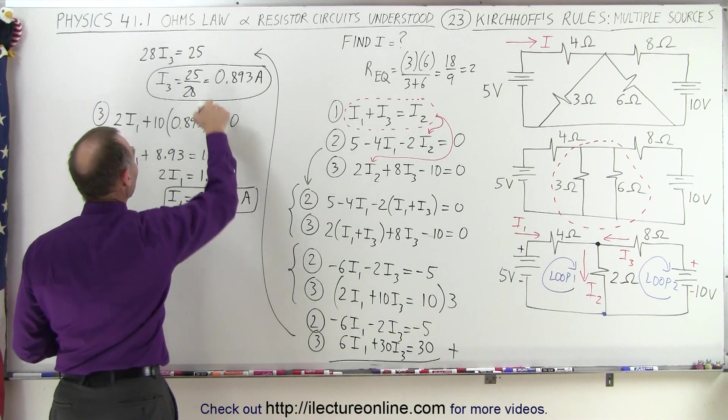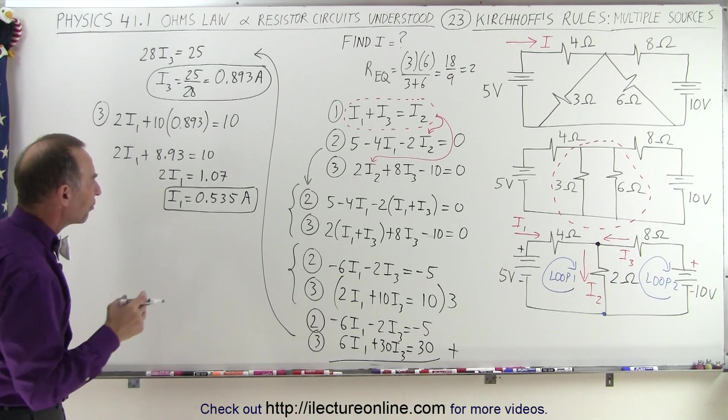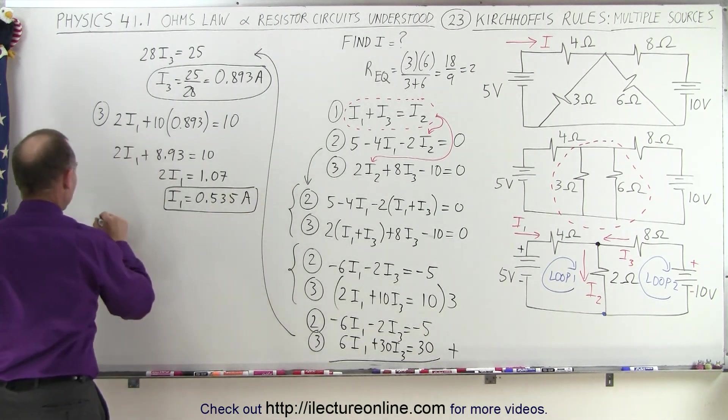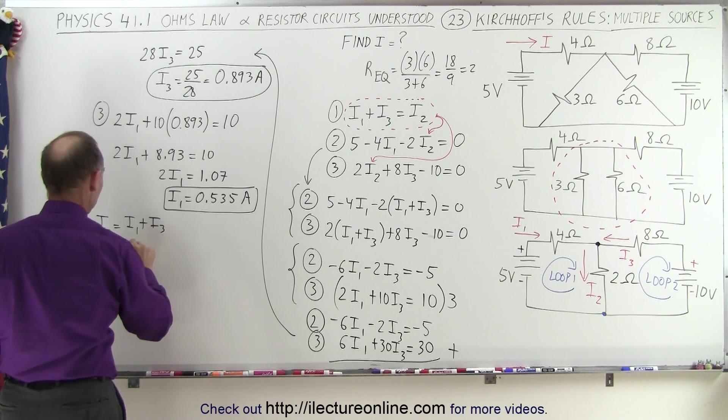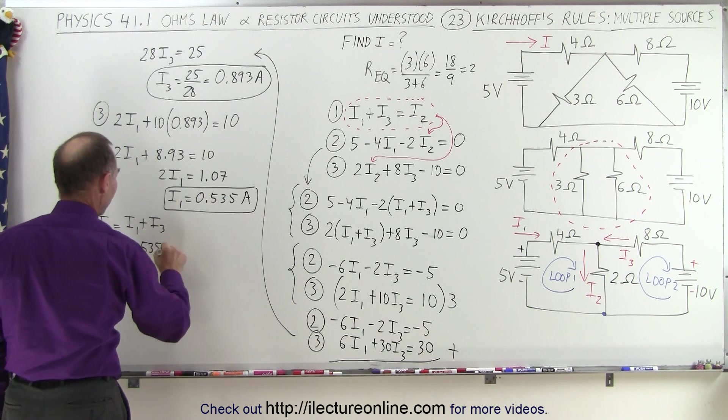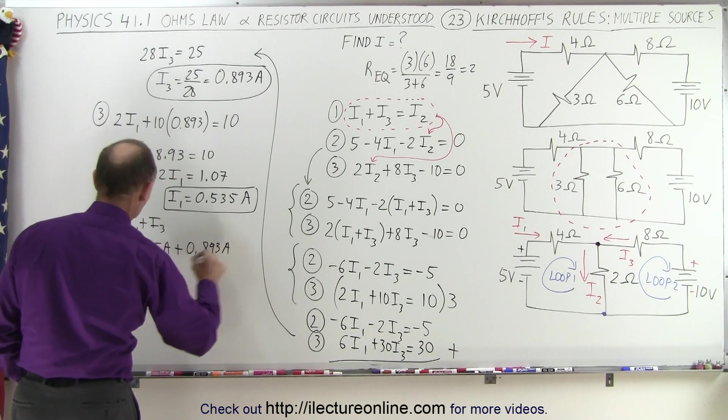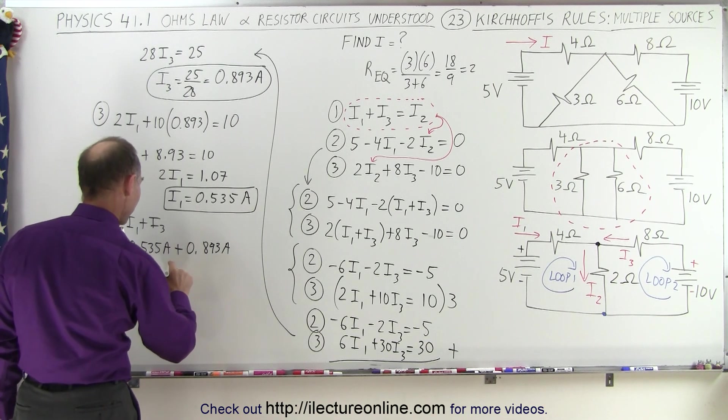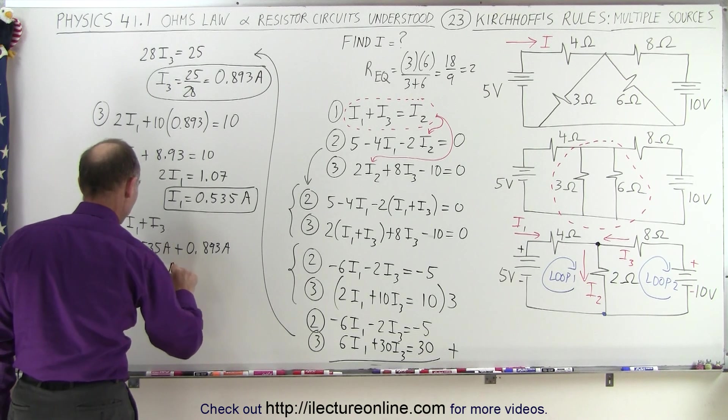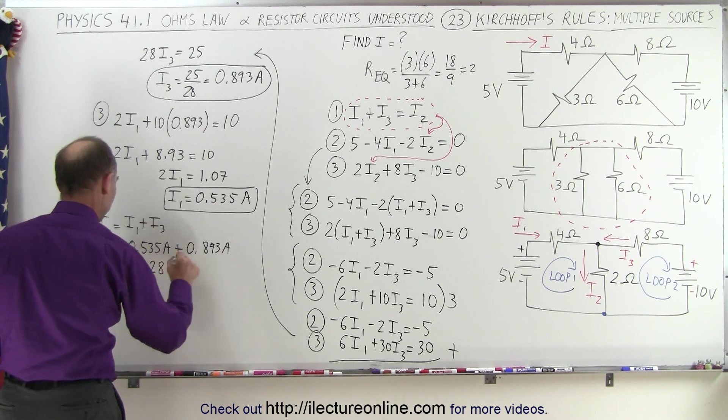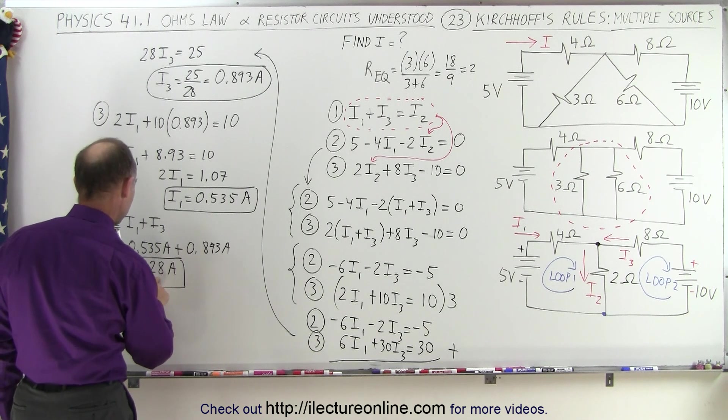So now we have I1, we have I3, but how do we know we are correct? How do we know we did not make a mistake somewhere? Well, let's find I2. We can do that by saying I2 is equal to I1 plus I3. So in this case, I1 is 0.535 amps, plus I3, which is 0.893 amps. So together, let's see here, that would be 5 plus 3, which is 8, 3 plus 9, which is 12, 1, 9, that's 14, 1.428 amps. That would be I2. Let's quickly check to see if that is correct. So we're going to subtract this from that. We get 9, we get, yes, 0.893. That is correct.